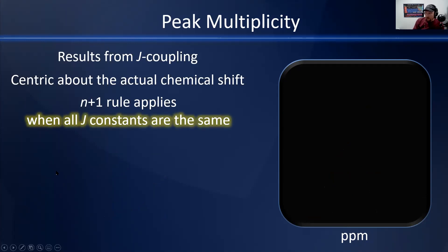When the J coupling constants are the same, all that n+1 multiplet stuff applies. But what happens when they're not? When they're not, the n+1 rule doesn't really work.